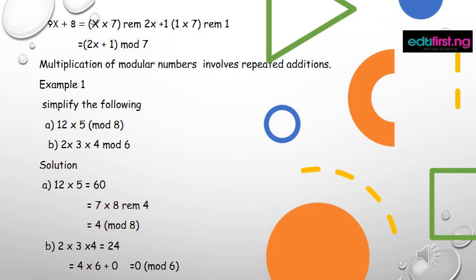Multiplication of modular numbers involves repeated additions. Example, simplify the following: a) 12 times 5 mod 8, b) 2 times 3 times 4 mod 6.